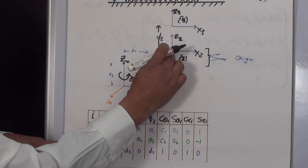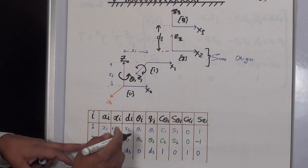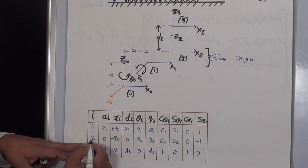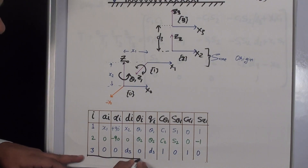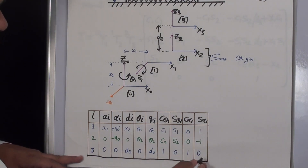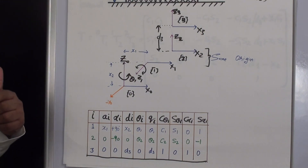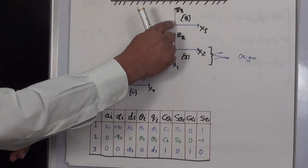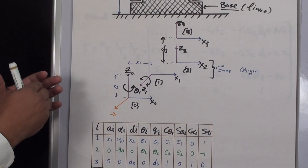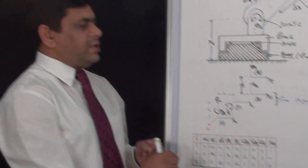Similarly, for link two and link three, we define the parameters for each frame and find these parameters by looking at the actual definitions of ai, alpha i, and di. Since we have already assigned the frames, it is important to note down the definitions of all ai and di once again — specifically the relationships between x, y, and the other coordinates.